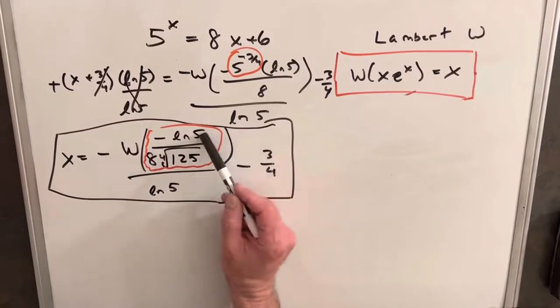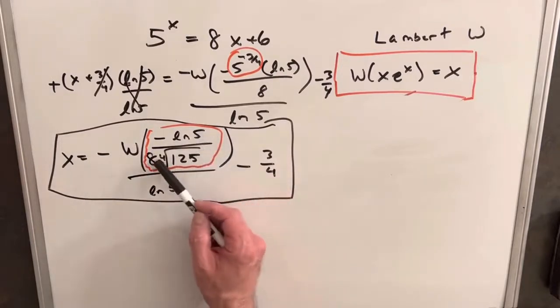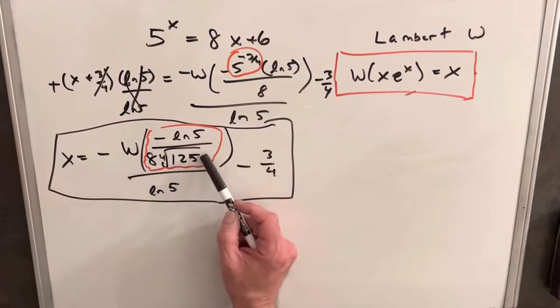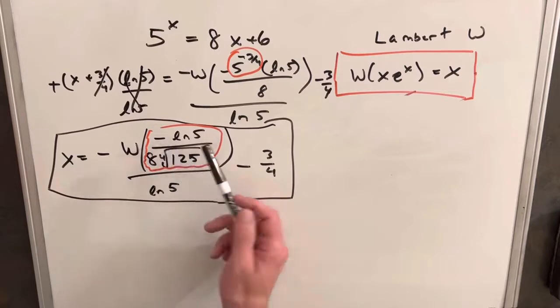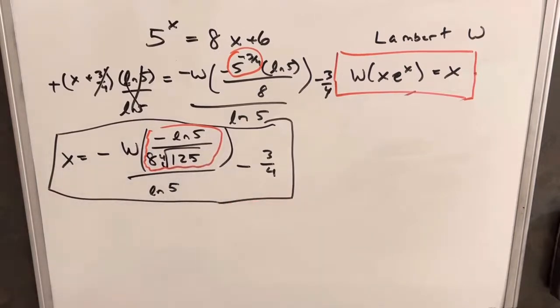So the ln of 5 is going to be a small number between 1 and 2. We have an 8 here. The 4th root of 125 is between 3 and 4, somewhere. I don't know where, like 3.5-ish. So we clearly have a number negative, but it's also a small number that's going to be in that region between 0 and minus 1 over e.